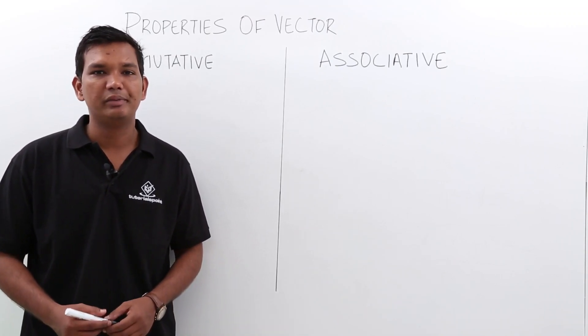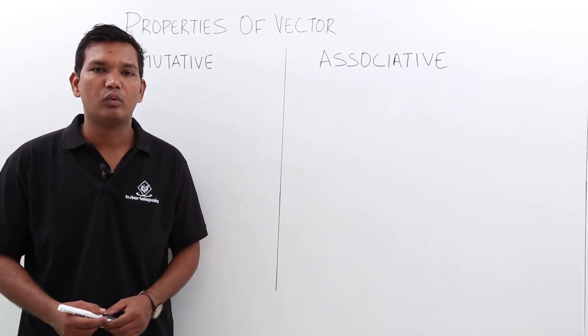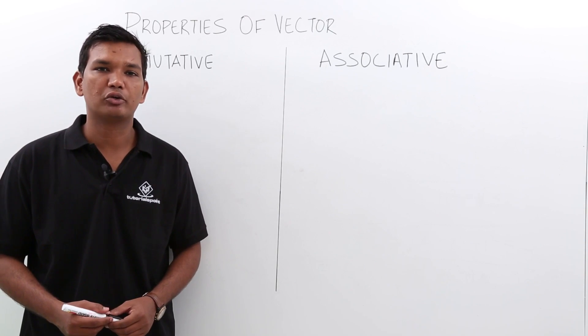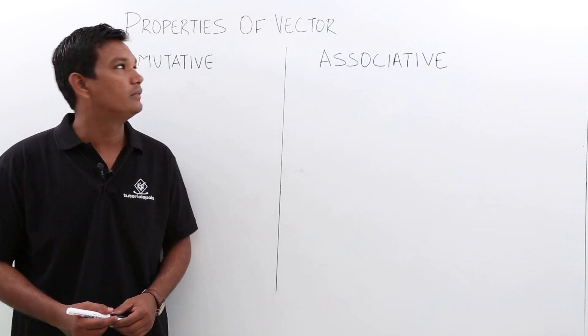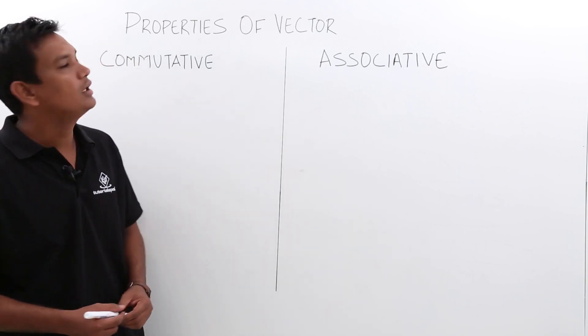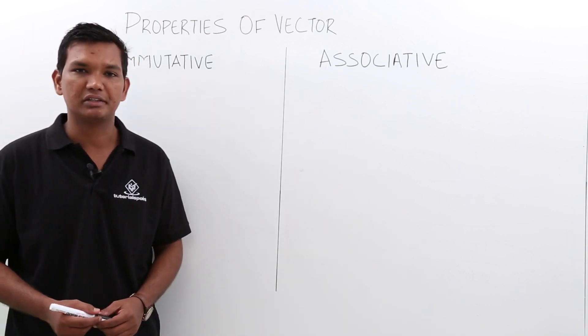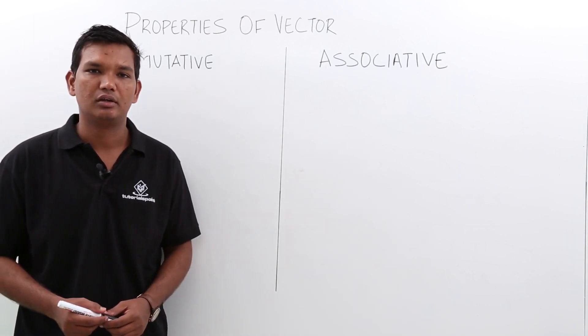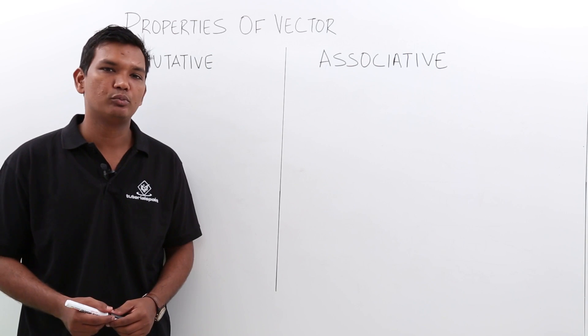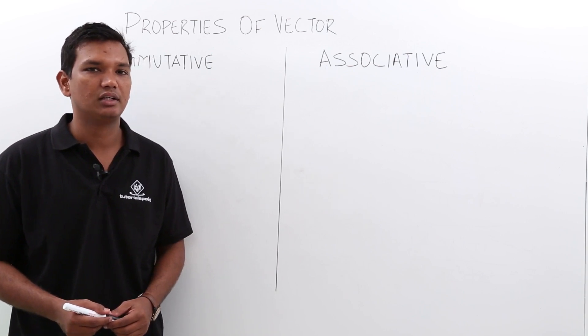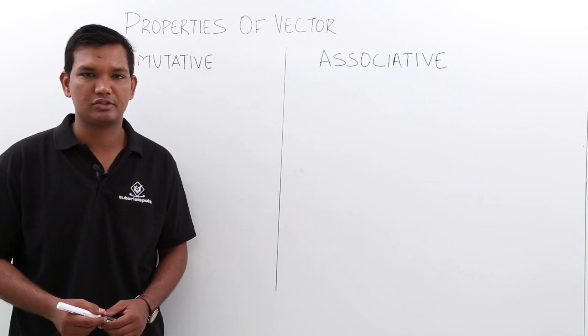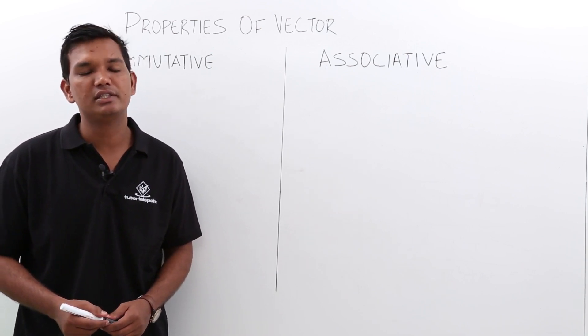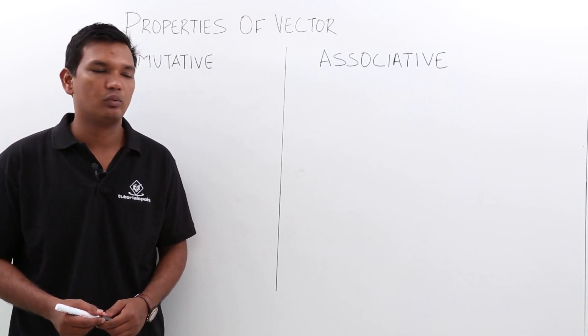In this class, we will be discussing one more topic of electromagnetics, which is nothing but properties of vectors. Vectors have two properties: commutative and associative. We will see each one by one.